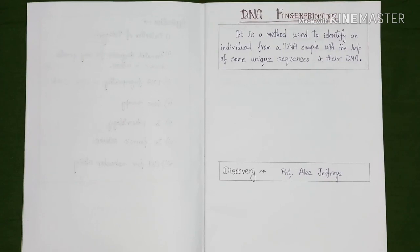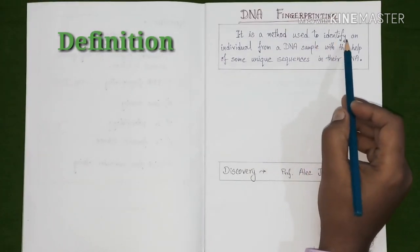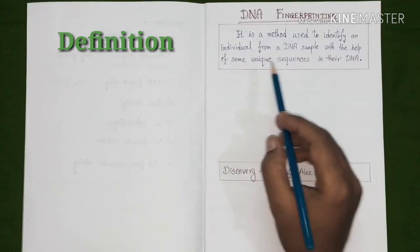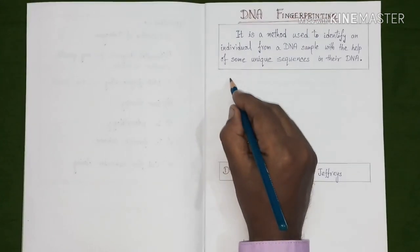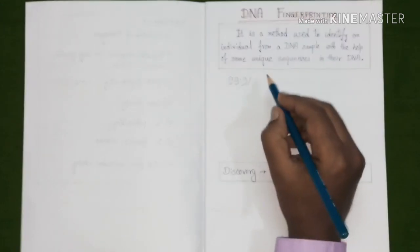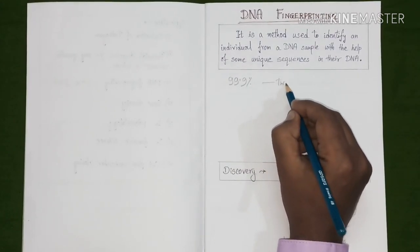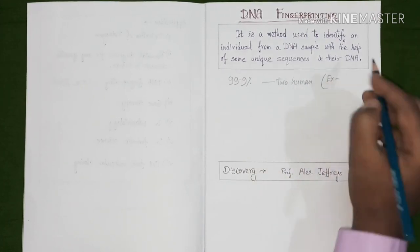Let's start with its definition. It is a method used to identify an individual from a DNA sample with the help of some unique sequences in their DNA. We all know that on average, 99.9% of all the DNA between two humans are the same, except that of identical twins.